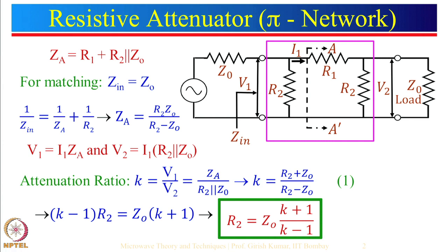We need to analyze this particular circuit, but before that we can actually get attenuation even by using a single resistor. Think that R2 is not there; in that case, if we have a single resistor R1, then V2 divided by V1 will be Z0 divided by Z0 plus R1. Suppose Z0 is 50 ohm and R1 is 50 ohm: 50 divided by 50 plus 50 is 1/2. So k equals 2, because k is defined as V1 by V2 — it is an attenuator, not a gain.